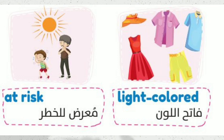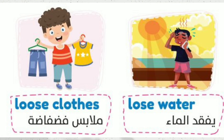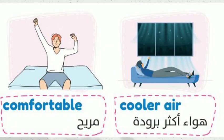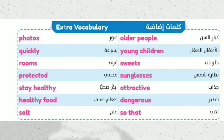Light colored loose clothes, loose, water, comfortable, cooler air. Extra vocabulary: photos, quickly, rooms, protected, stay healthy, healthy food, salt.